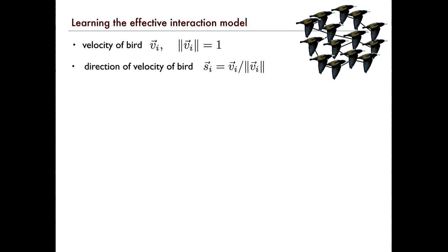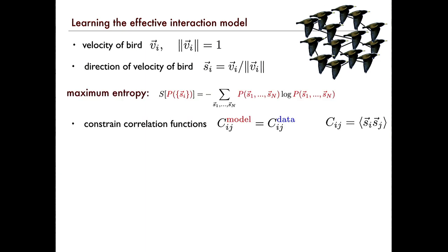We're going to make a few assumptions. Each bird has a velocity v_i, indexed by i. We're going to normalize this velocity — for the time being, I'm only going to care about direction, not speed. So I don't care how fast it goes; I'm just looking at where the arrow is pointing. We're going to try and build the model from a class of models called maximum entropy models. Maximum entropy models are models where you write down the entropy of the distribution of these directions and say you want this entropy to be as large as possible.